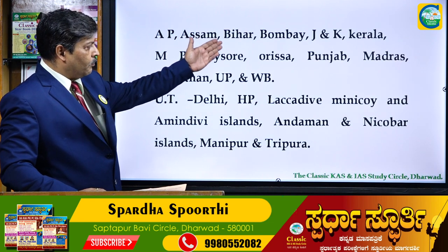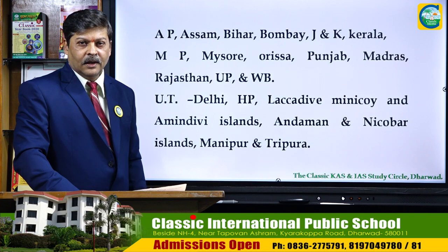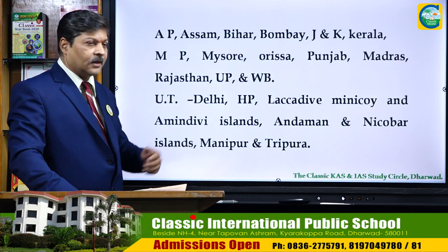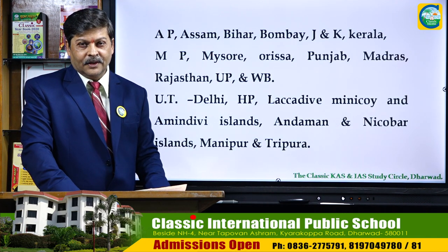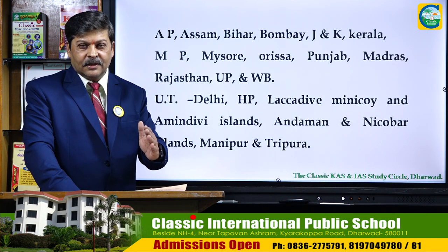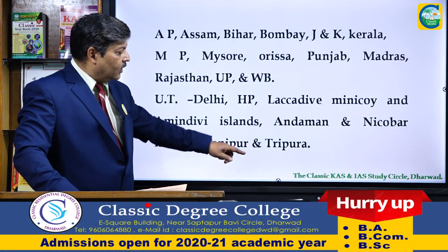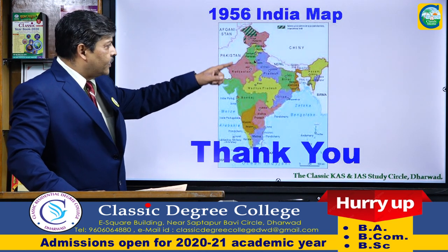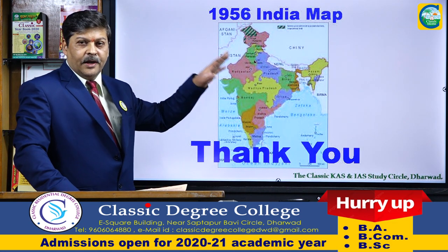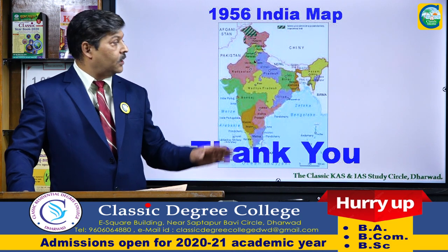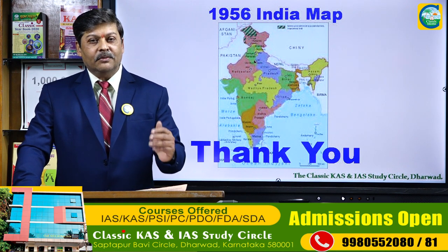The States Reorganization Act established 14 linguistic states in India: Andhra Pradesh, Assam, Bihar, Bombay, Jammu and Kashmir, Kerala, Madhya Pradesh, Mysore, Orissa, Punjab, Madras, Rajasthan, Uttar Pradesh, and West Bengal — along with six union territories. The linguistic states movement achieved its success with the passing of the States Reorganization Act of 1956, with November 1st, 1956 marking the formation of these linguistic states in India.